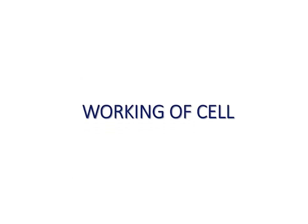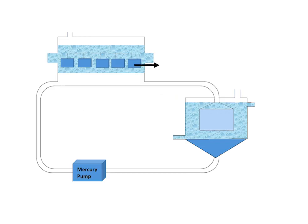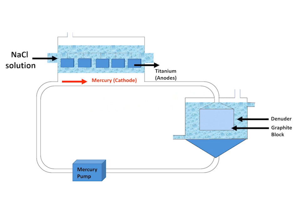Now we are discussing the working of the Kastner-Kellner process. Concentrated solution of sodium chloride, which is called brine, is sent to the upper electrolytic portion, where it is ionized to sodium positive ions and chloride negative ions. On passage of electricity, ions move towards their respective electrodes.